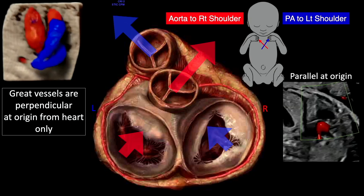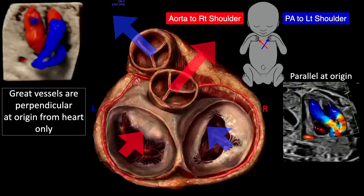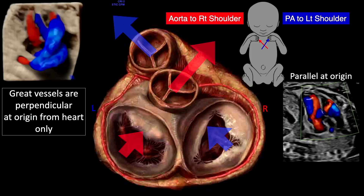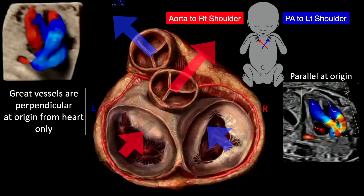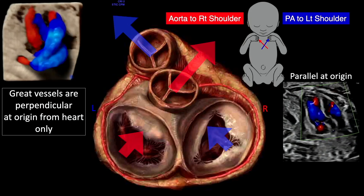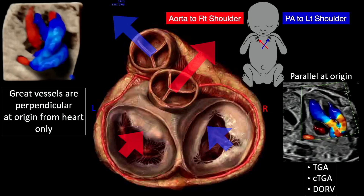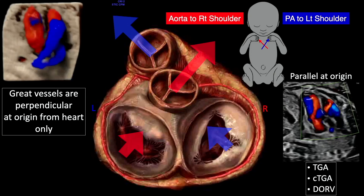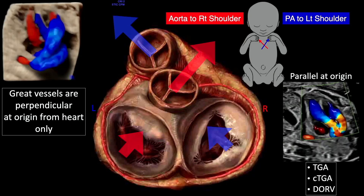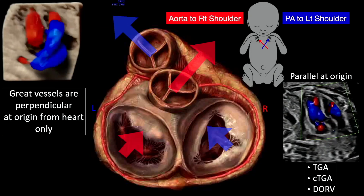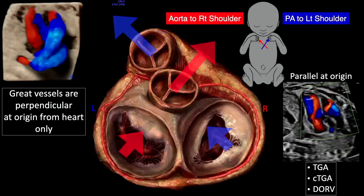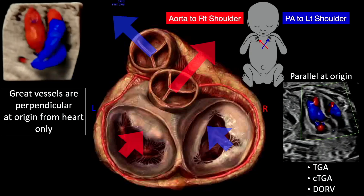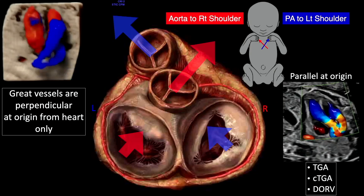If you have parallel orientation of the great vessels as they come out of their respective chambers, as you see in this oblique view, this is typically diagnostic of transposition of the great arteries, corrected transposition, or in some cases double outlet right ventricle. That's really why the relationship of the great vessels is so important.